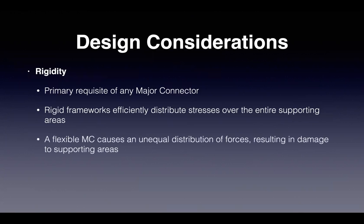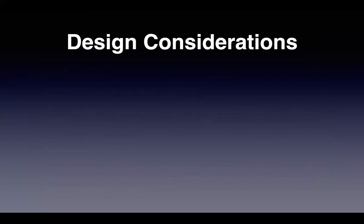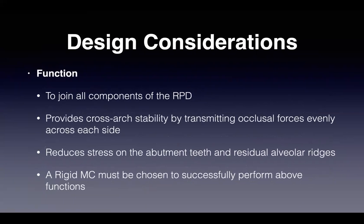The supporting area includes the abutment teeth, the underlying bone, and soft tissues. Rigidity is measured via flexibility: a flexible major connector causes unequal distribution of forces, resulting in damage to supporting areas. Flexibility can be minimized by increasing the bulk of the connector, including two planes in the design, maximizing soft tissue coverage, placing direct retainers in ideal locations, and adding additional rests.